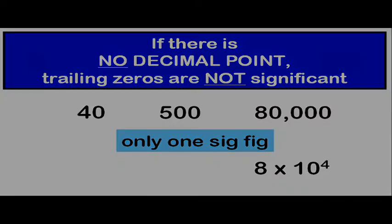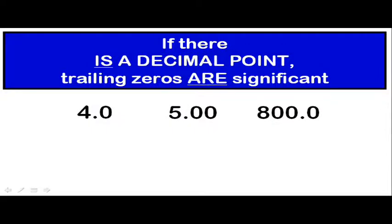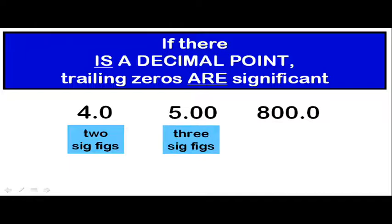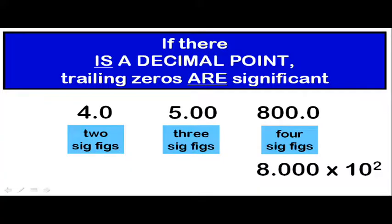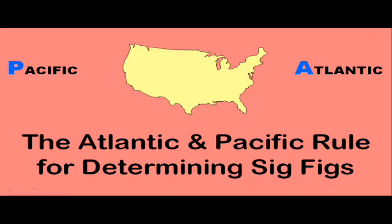Now let's take a look at what happens when there is a decimal point. Now the trailing zeros are considered to be significant. 4.0 has two sig figs, 5.00 has three sig figs, and 800.0 has four sig figs. If we were to write 800.0 in scientific notation, it would have to contain four sig figs. So therefore, the number would be written as 8.000 times 10 to the second power.